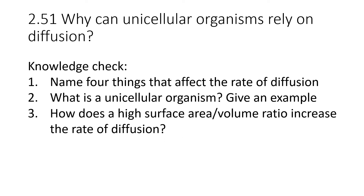Pause the video now and have a go at these questions to check you've absorbed what you need so far. Name four things that affect the rate of diffusion. What is a unicellular organism — give an example. How does a high surface area to volume ratio increase the rate of diffusion? The four factors are: moistness, distance, temperature, and most crucially surface area to volume ratio. A unicellular organism is an organism made of only one cell — an example would be a bacterium. Having a larger surface area means there is a larger surface through which diffusion can happen, therefore increasing the rate.